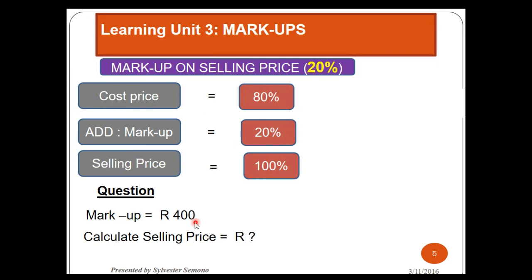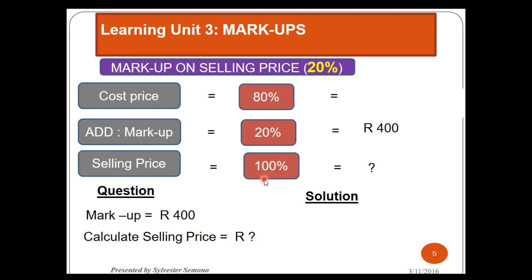Let's say I give a markup of 400 and I say I want you to calculate the selling price. Again, you need to put the question mark where you are required to calculate something, so I have a question mark on the selling price. I put 400 in line with the markup. Where I put the question mark, that percentage is on top — I'm going to have 100 on top. I divide by 20 — the percentage of the amount I know — and I multiply by 400, and I get 2,000.